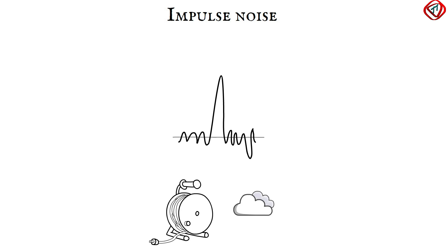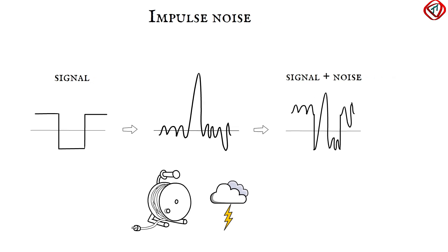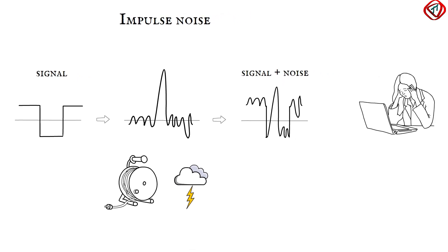Impulse noise is a spike generated in the transmission medium from power lines or lightning. Impulse noise increases or decreases a circuit's signal level. This causes the receiving equipment to misinterpret the signal.